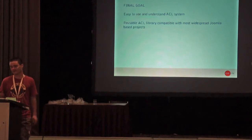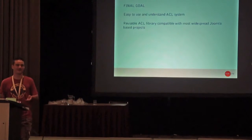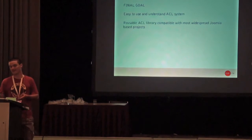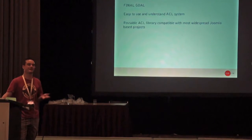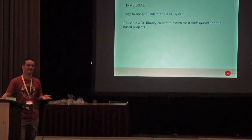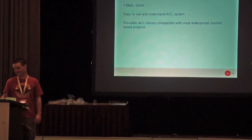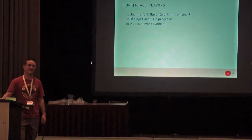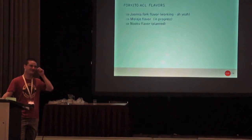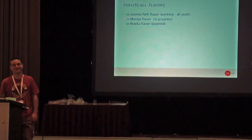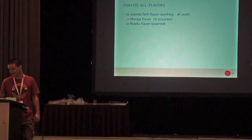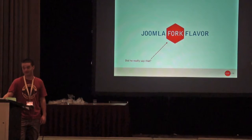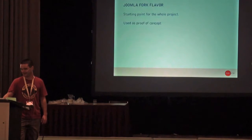The goal is also — and this is not common because it's something not very often done — a library that can be reused by any of the most widespread Joomla-based projects. Those are Nuku, Molagio, and original Joomla. So three versions will exist. We now have an existing Joomla fork flavor — that's where the name comes from. Yes, I forked Joomla, and I will explain why and how. That is the Molagio flavor and the Nuku flavor.